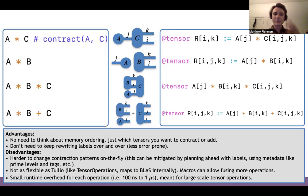The disadvantages are that it's harder to change contraction patterns on the fly, though this can be mitigated by planning ahead of time with the indices you give your tensors. Also, iTensor may not be as flexible as libraries like Tullio, which can represent more general tensor operations.